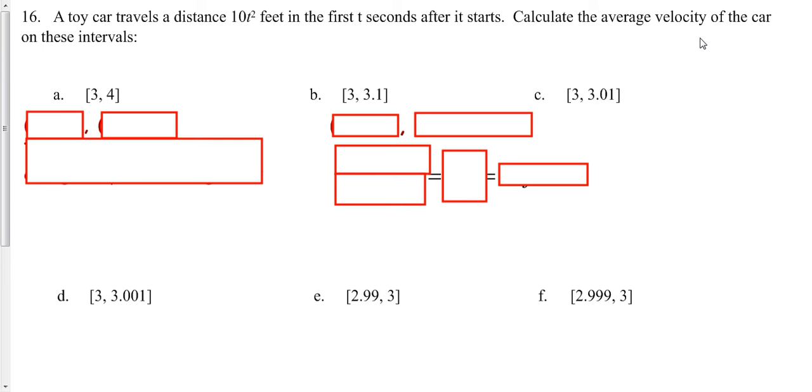Whenever you're looking for average velocity or just average rate of change, you're really just looking at your slope formula. So in this first situation here they want you to find the slope between when t is 3 and t is 4.